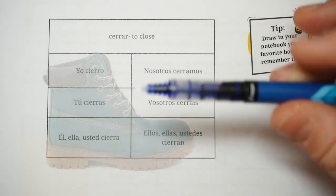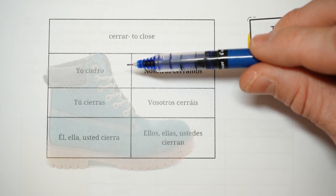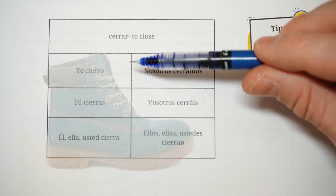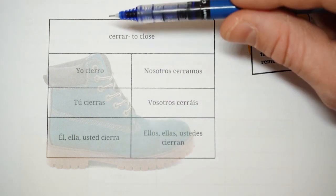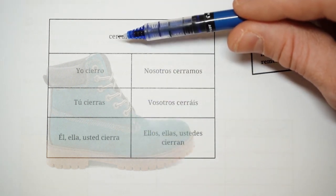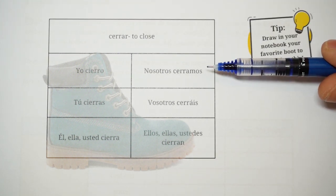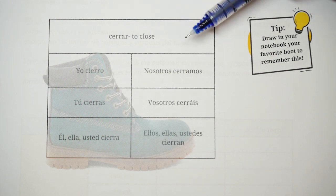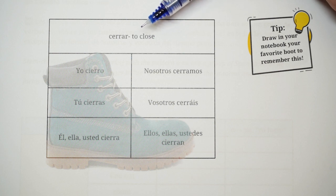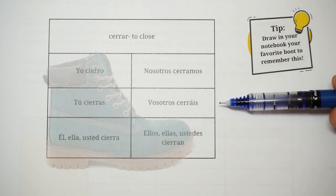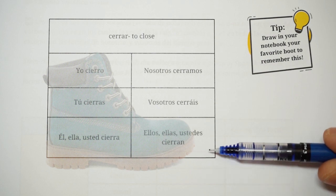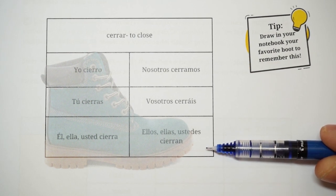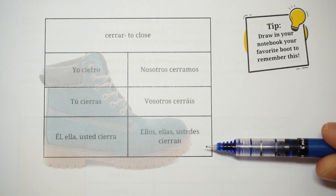Inside of the boot, we are going to have the forms of the verb that we conjugate: yo cierro, tú cierras, él cierre. Notice that we are replacing the e for ie. Outside the boot, we don't apply that change — we keep the stem as it is. In this case, the verb cerrar, in English 'to close,' will keep the stem C-E-R-R, so it will be nosotros cerramos and vosotros cerráis. And then back inside the boot, we have the last one: ellos cierran, or ellas cierran, or ustedes cierran.